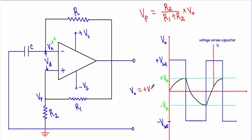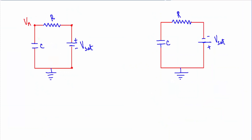When the output voltage is at plus Vsat, a portion of plus Vsat is applied at the non-inverting terminal: Vp equals R2 divided by (R1 plus R2) into plus Vsat, which is a positive quantity. At T equals zero, the capacitor was uncharged (Vn equals zero) and the output was plus Vsat. Now the capacitor C starts charging through feedback resistor R, trying to store the plus Vsat voltage across its terminals.